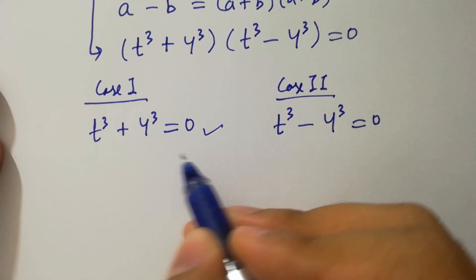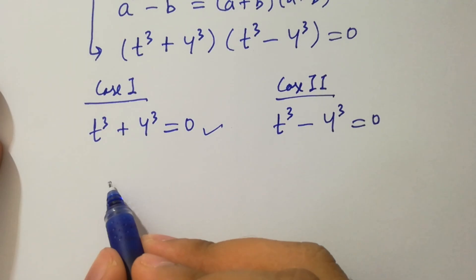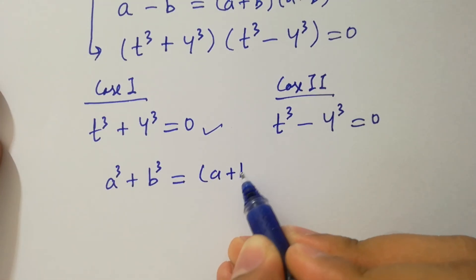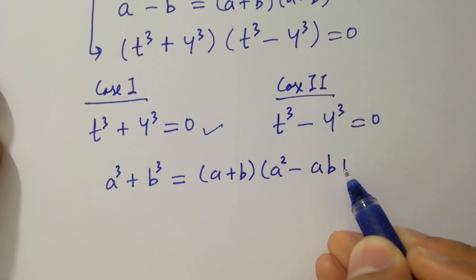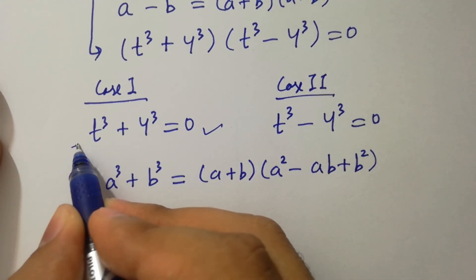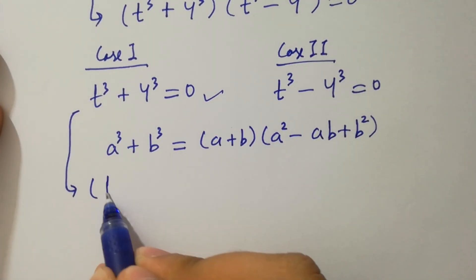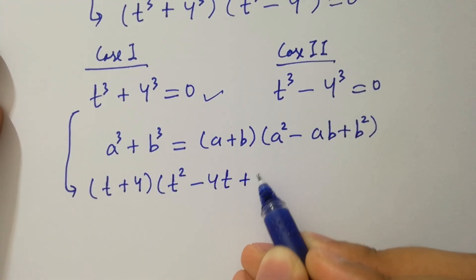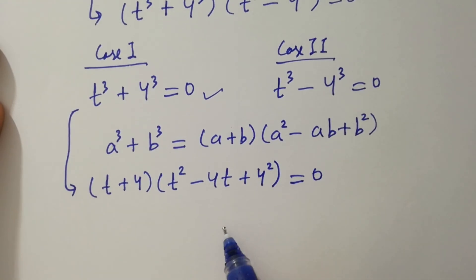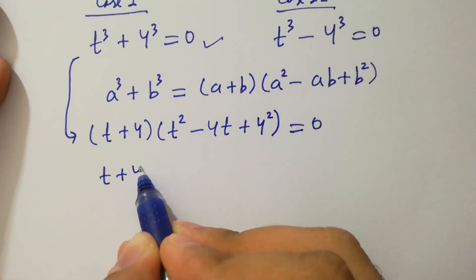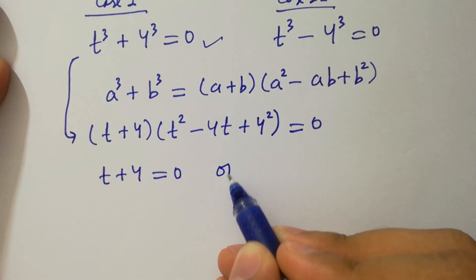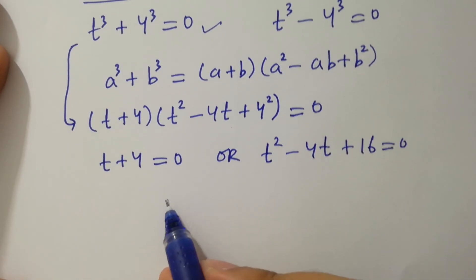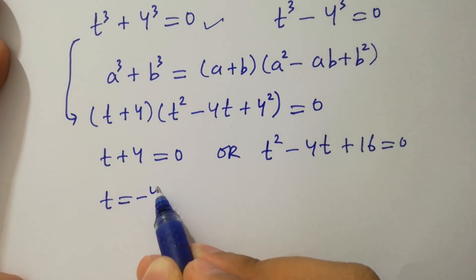First, take case one: t cubed plus 4 cubed equals 0. We know the formula a cubed plus b cubed equals a plus b times a squared minus ab plus b squared. Applying this, we get t plus 4, times t squared minus 4t plus 16, equals 0. Either t plus 4 equals 0, giving us t equals minus 4.